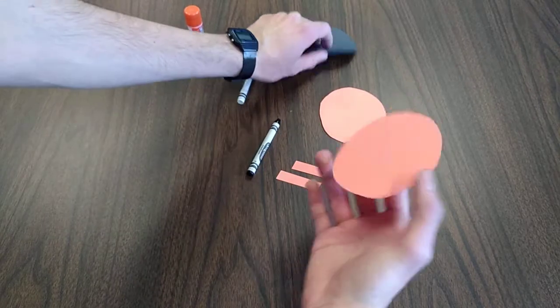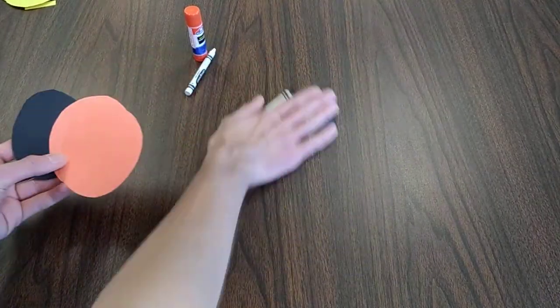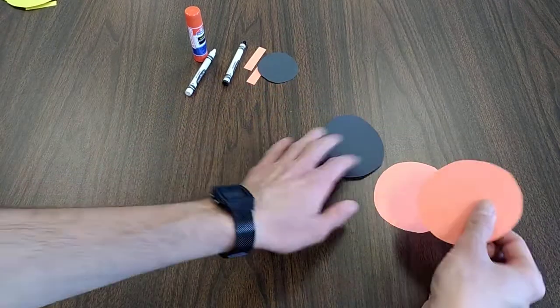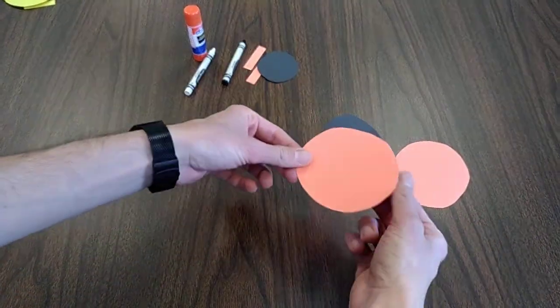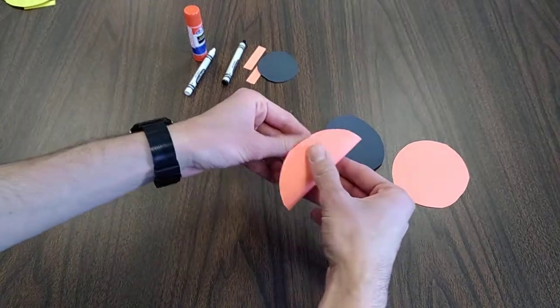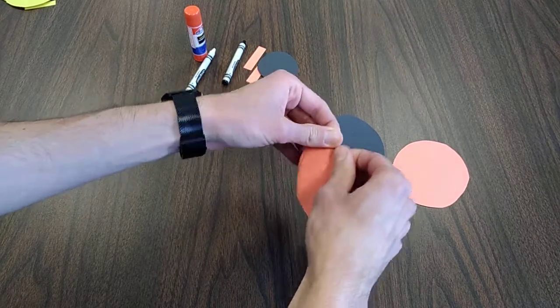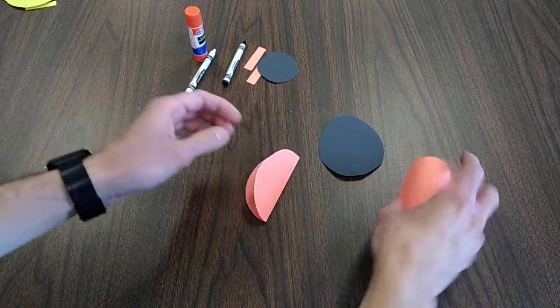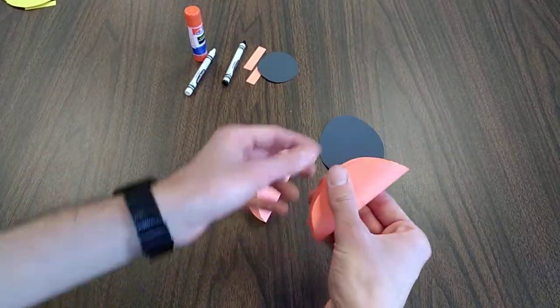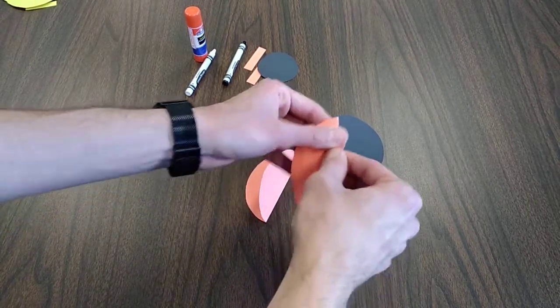So to start, we're going to take our large circle and our two orange circles. We're going to take each orange circle and fold it in half, just like that. Repeat. There we go. These will be our wings.